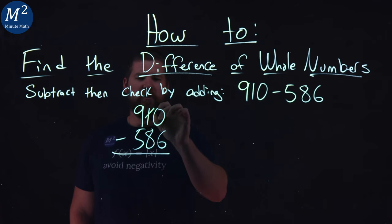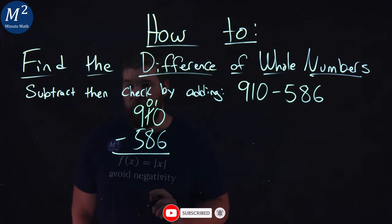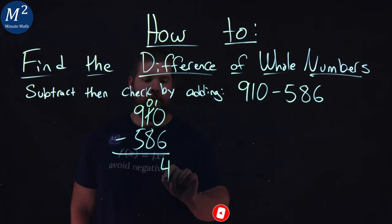The 1 here, turn that to be a 0, and bring that 1 over here. Make that a 10. 10 minus 6 now is an easier question to ask, and that's a 4.